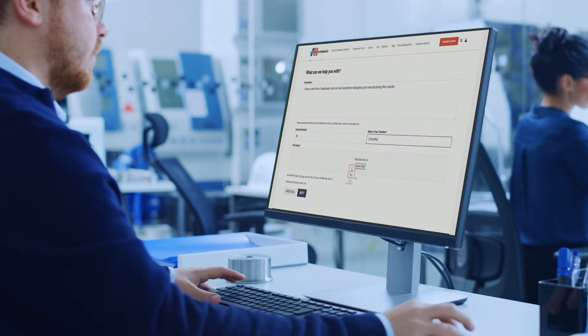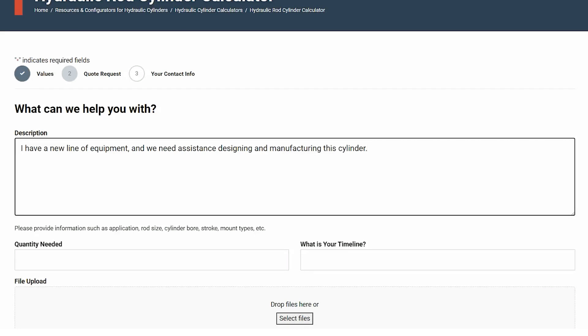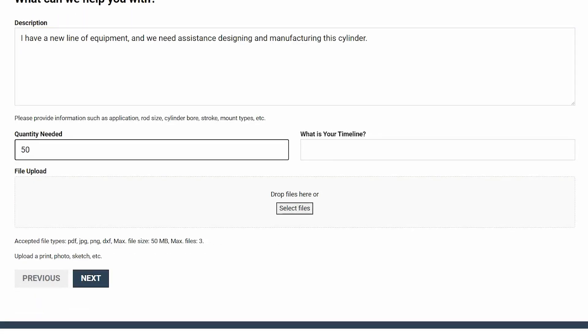Here, the user can provide additional information for our sales team. In the description field, the user can provide details such as application requirements and specific questions regarding the cylinder. Additionally, there are fields for quantity needed and the desired timeline for delivery.